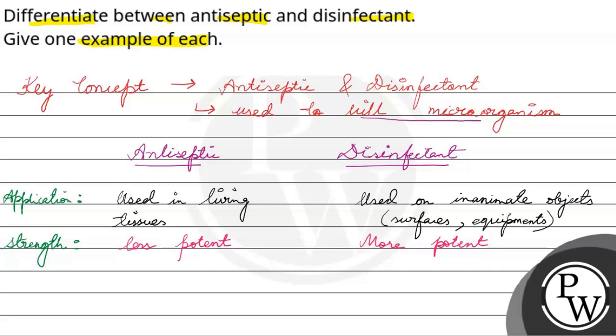And then finally the purpose. Antiseptic is used to prevent or reduce infection. Disinfectant is used to kill microorganisms on surfaces. Antiseptic is used to prevent or reduce infection caused by microorganisms in living tissues, and disinfectant is used to kill microorganisms on surfaces.